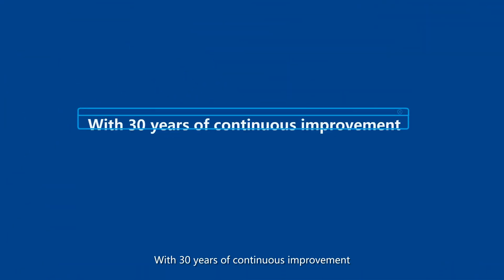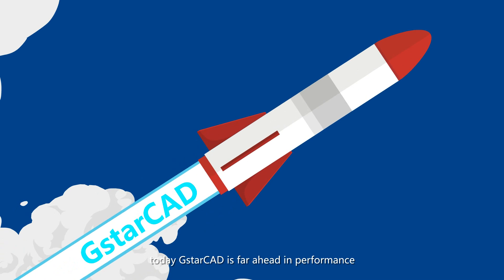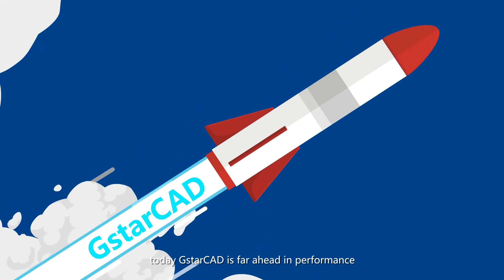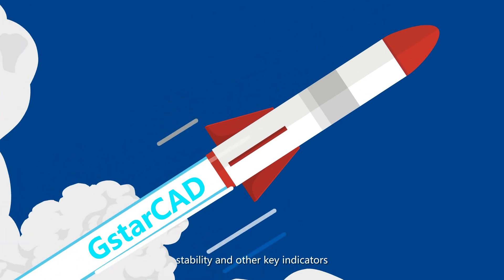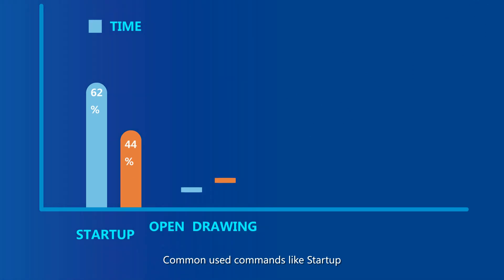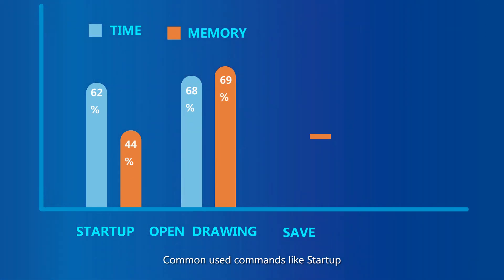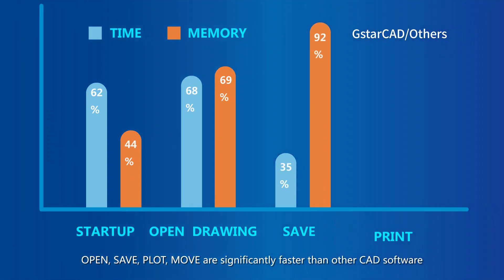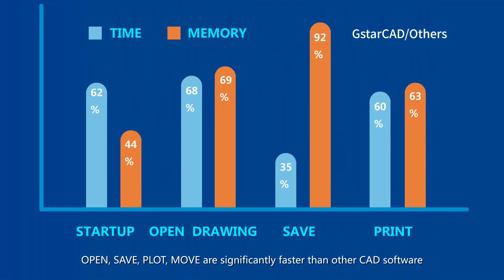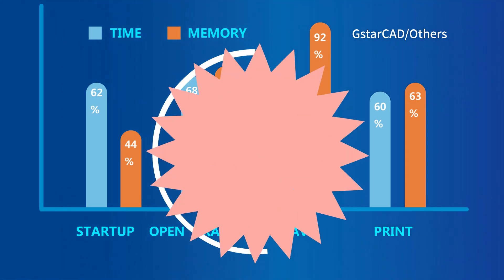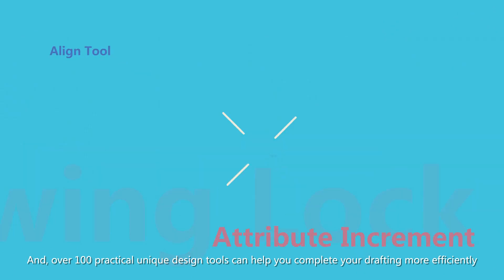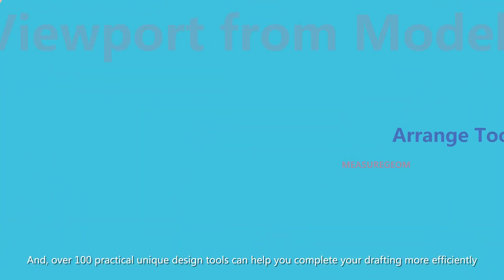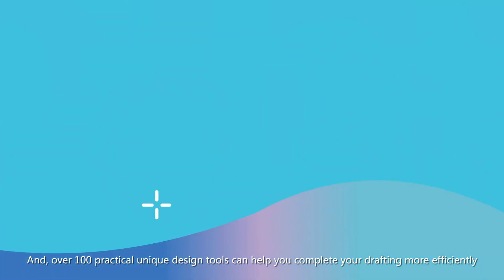With 30 years of continuous improvement, today G-Star CAD is far ahead in performance, stability, and other key indicators. Common-use commands like startup, open, save, plot, and move are significantly faster than other CAD software, and over 100 practical unique design tools can help you complete your drafting more efficiently.